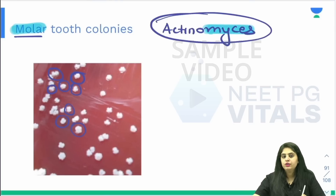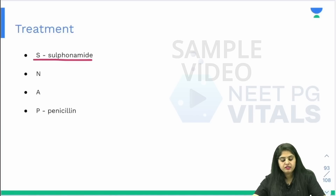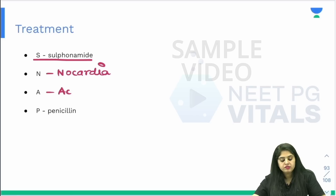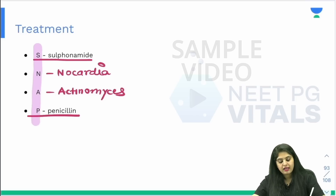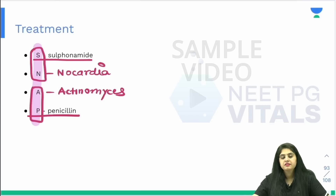Now for the treatment of both of them, remember the mnemonic SNAP. What is SNAP? Sulfonamide is the treatment of Nocardia, and for Actinomyces you have Penicillin. So the SNAP mnemonic: Sulfonamide for Nocardia, and for Actinomyces — Penicillin.